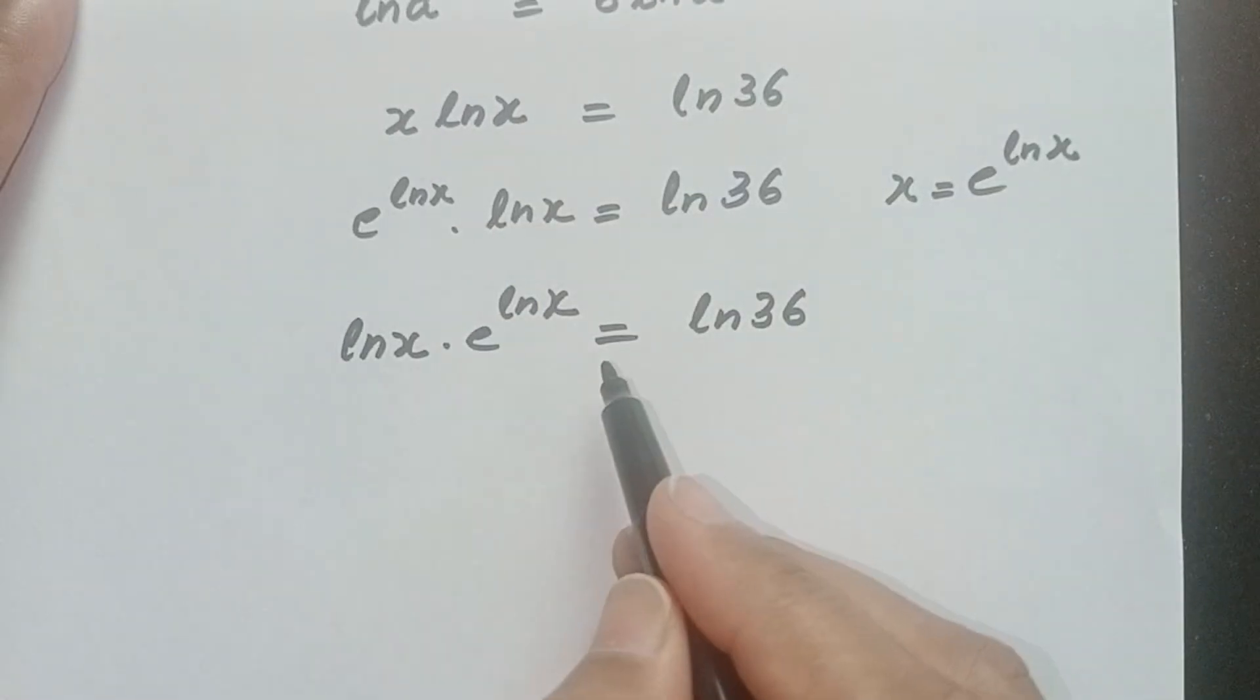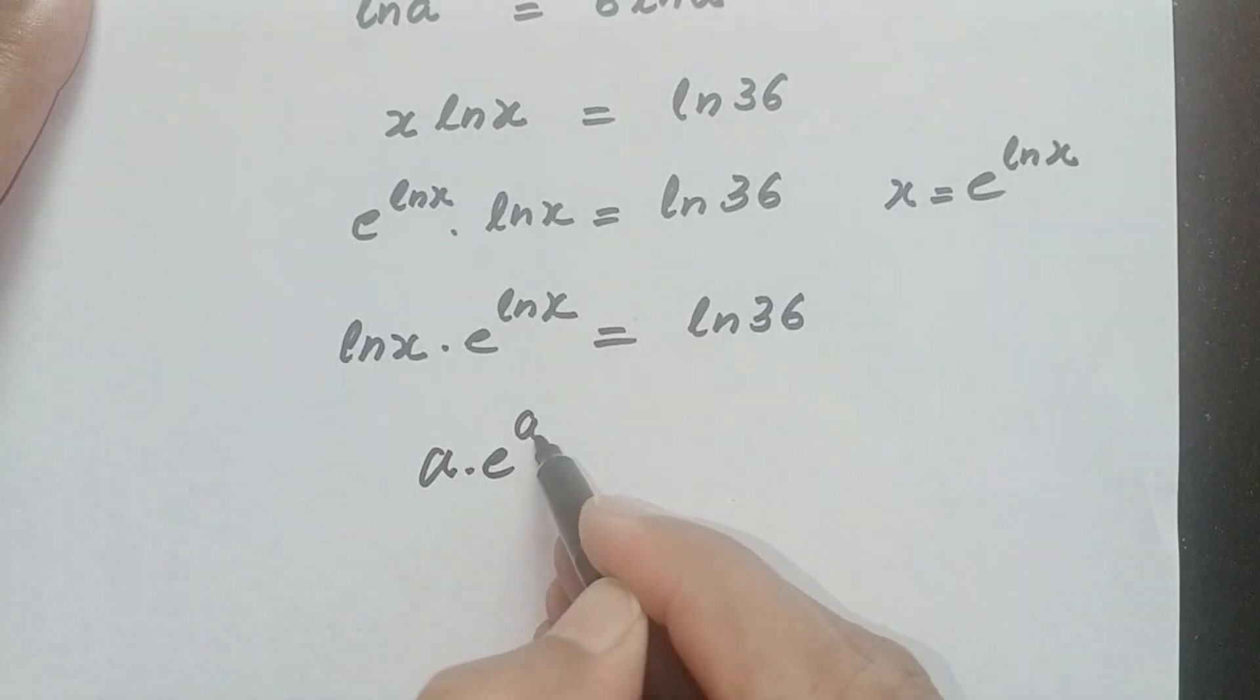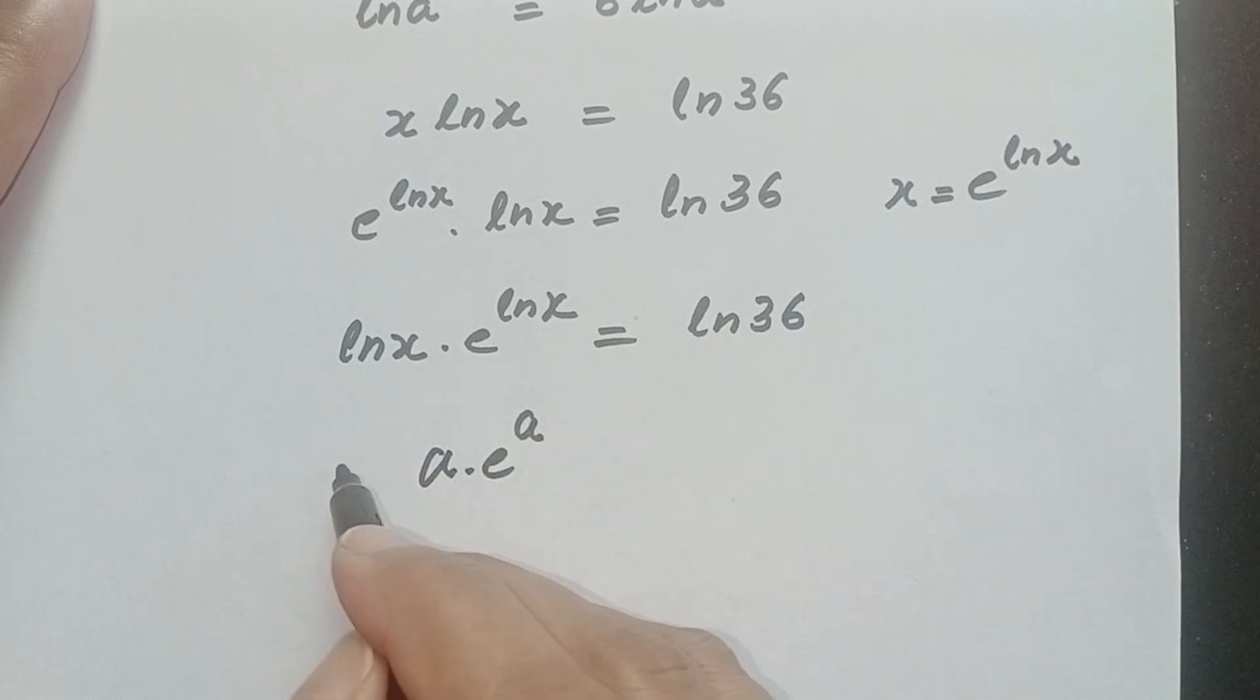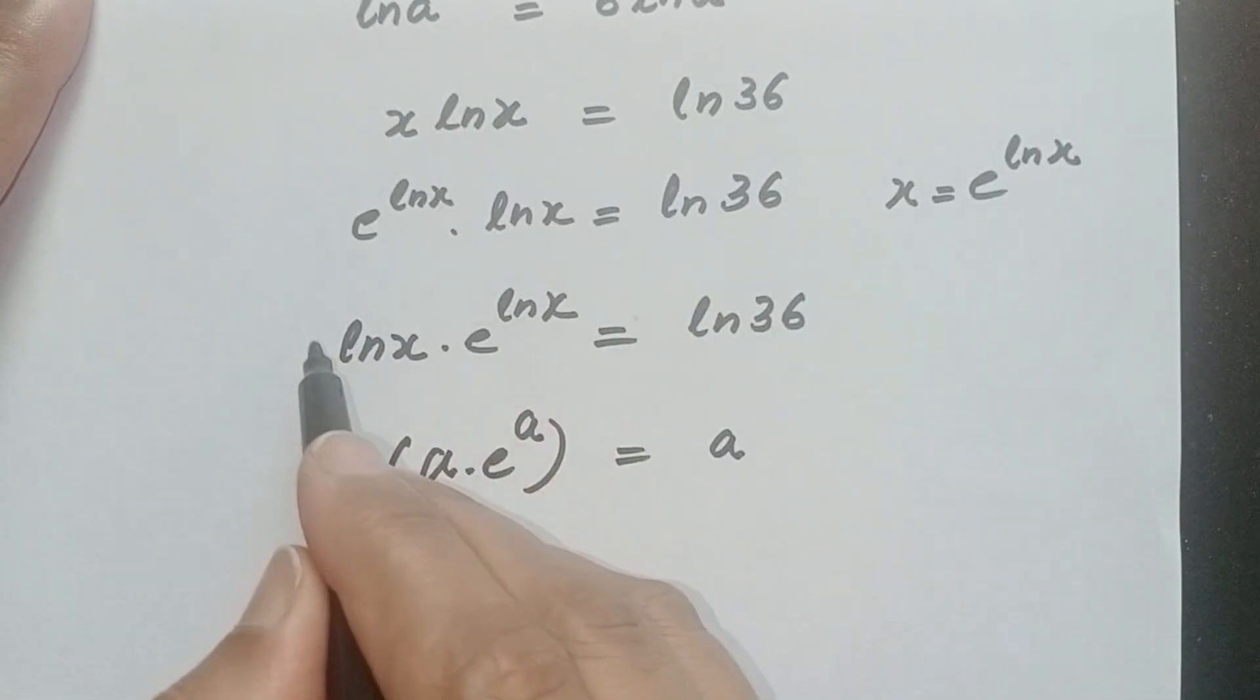So here, recall the Lambert W function: if we have the expression of the form a times e power a, where a is the coefficient and a is the power of e, then we can apply Lambert W function and we will get the answer a. So here we have the same kind of expression.